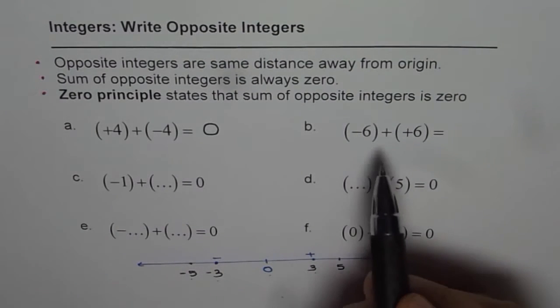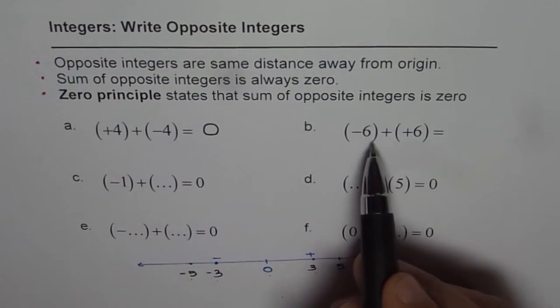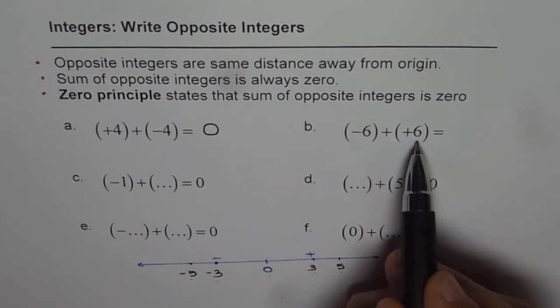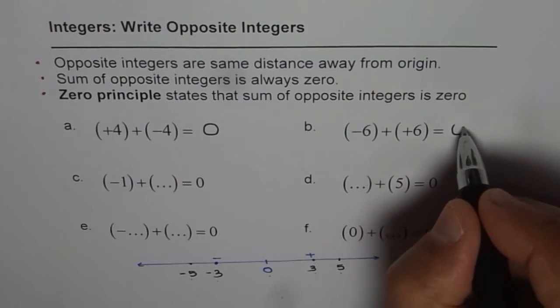How about minus 6 plus plus 6? These are also opposite integers, so their sum should be 0.